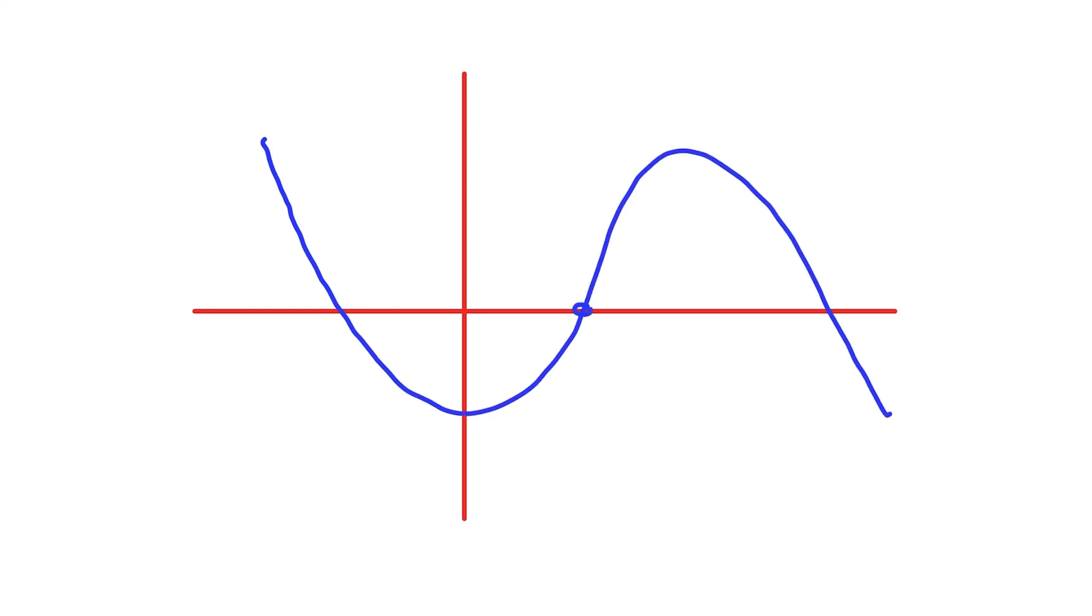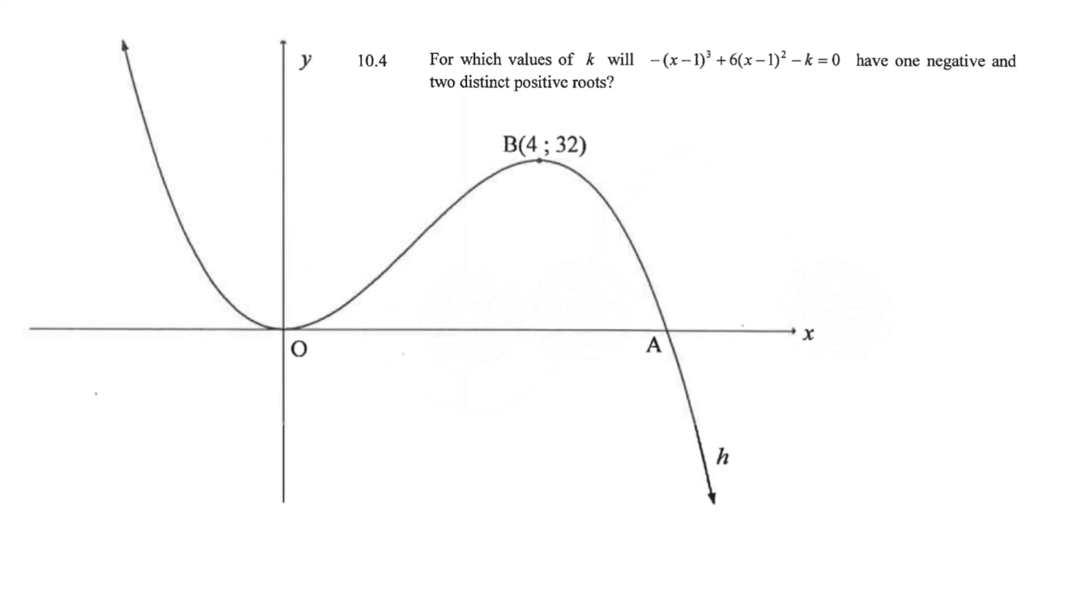So when they speak about roots, they're speaking about x-intercepts. And this rough sketch has one negative root, which is on the left-hand side of the origin, and it has two positive roots. So one x-intercept on the left of the origin, and two x-intercepts are on the right of the origin.